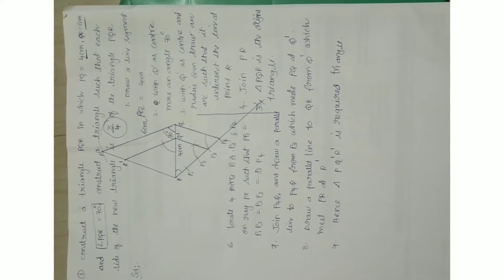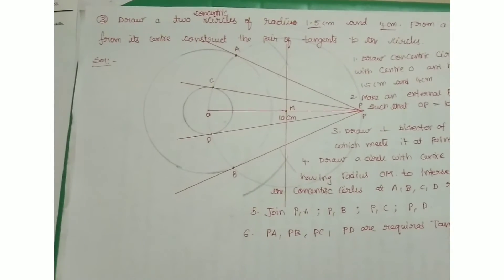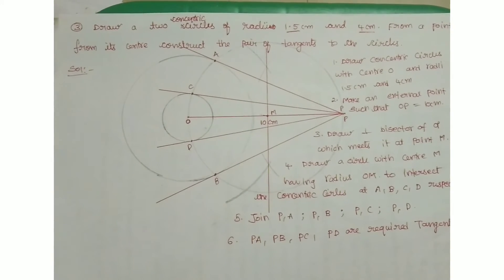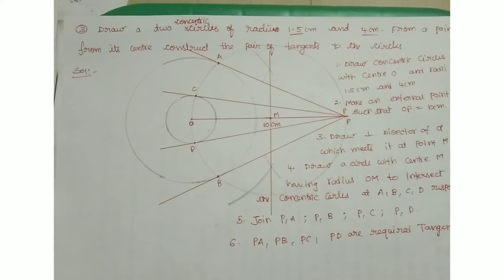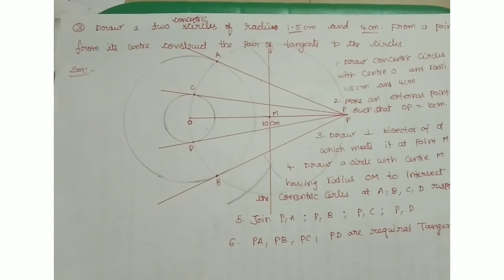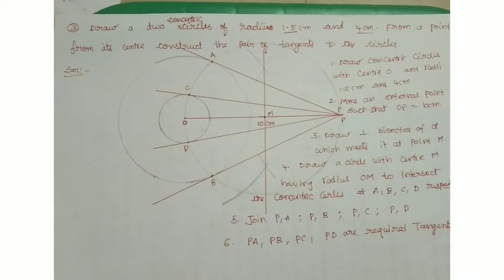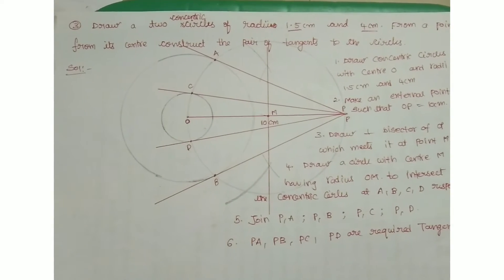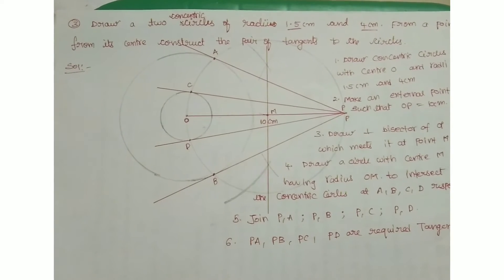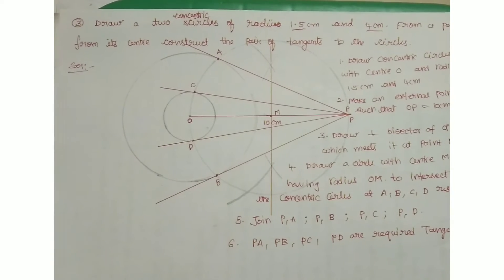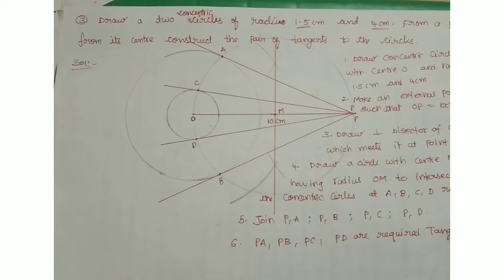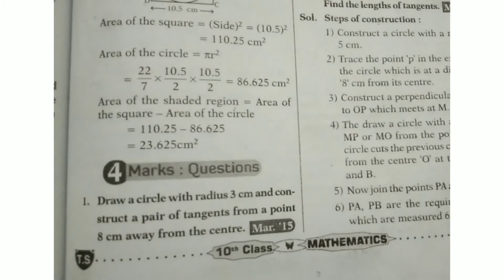An important question from chapter nine — tangents: draw two concentric circles of radii 1.5 cm and 4 cm, from a point 10 cm away from the center, and construct a pair of tangents to the circles. How to construct tangents to a given circle and similar triangles is also explained in a separate video.